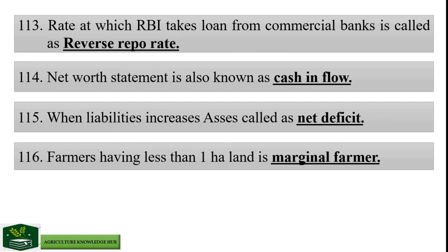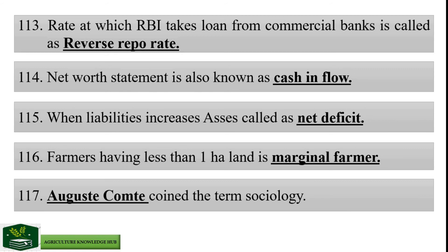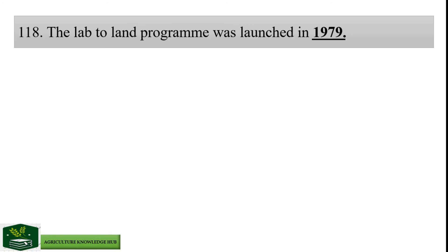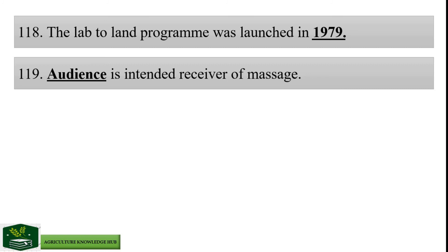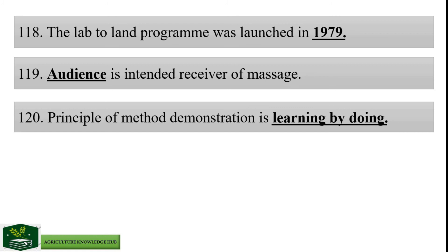Farmers having less than 1 hectare land are marginal farmers. Auguste Comte coined the term sociology. The lab-to-land program was launched in 1979. Audience is the intended receiver of message. Principle of method demonstration is learning by doing.